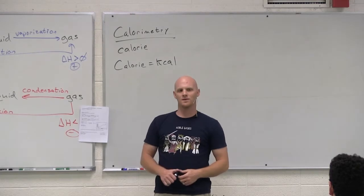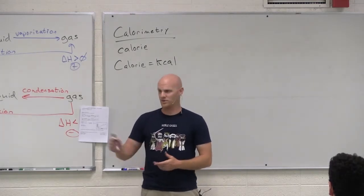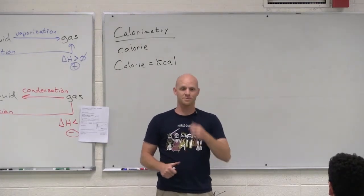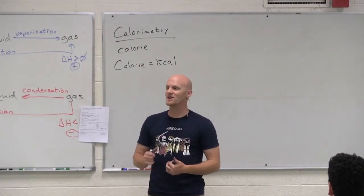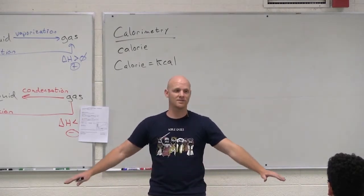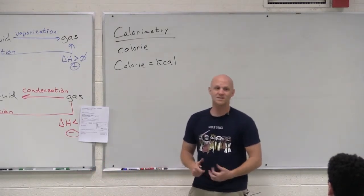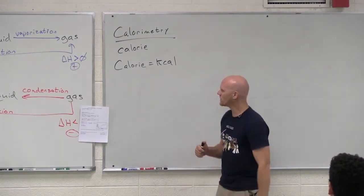It doesn't care what pathway you take, whether you light it on fire or whether you enzymatically do it over a bunch of steps inside your body. If it's the same net result, the delta H value is the same. It's a state function, path independent. So that's why they can just burn it and get the correct value.